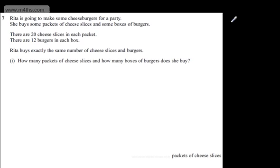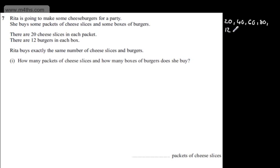If you're unsure you can do this manually. Starting with the cheese slices: 20, 40, 60, 80, 100 and so on. If we look at the burgers we'd have 12, 24, 36, 48 and then 60. So we can see that the common value is 60.